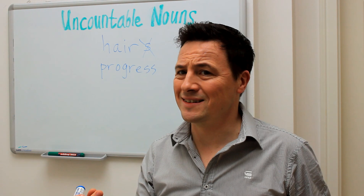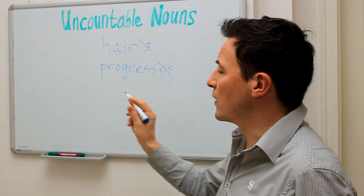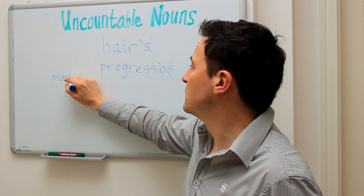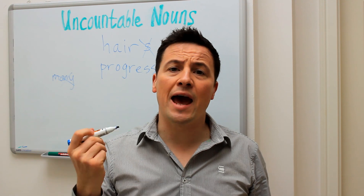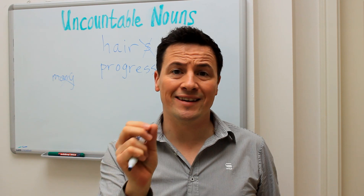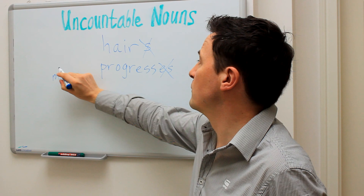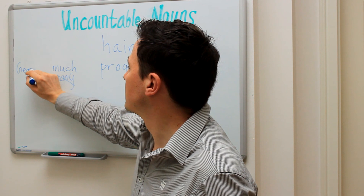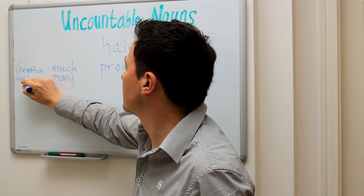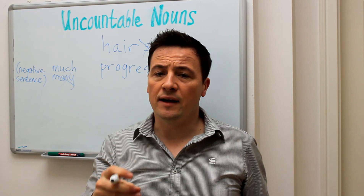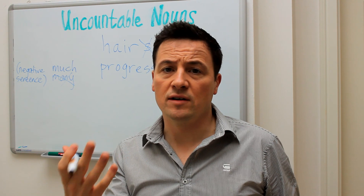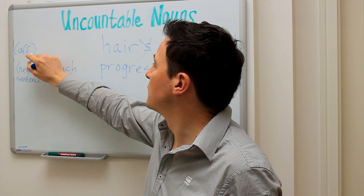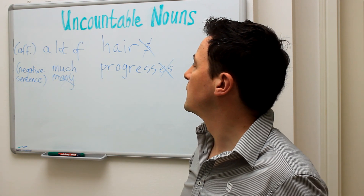Like hair, you cannot say 'progresses.' You also cannot say 'many progresses' because 'many' goes with countable nouns. In a negative sentence you say 'much progress,' and in an affirmative sentence you say 'a lot of progress' — or 'a lot of hair' if it's affirmative.